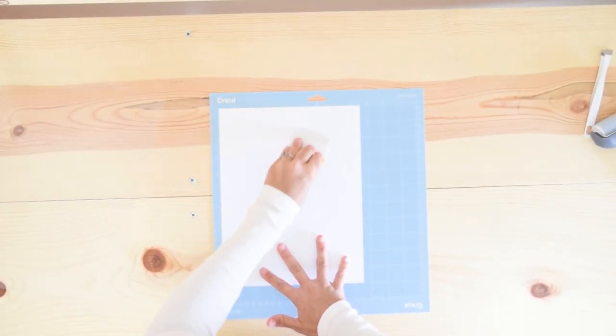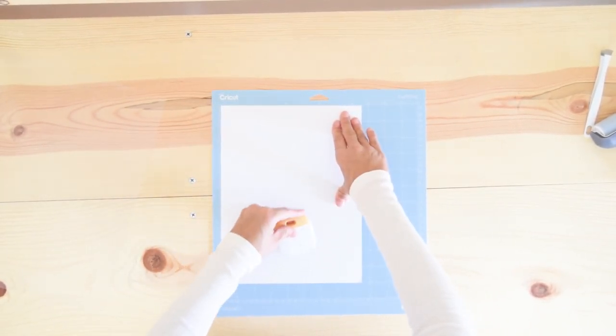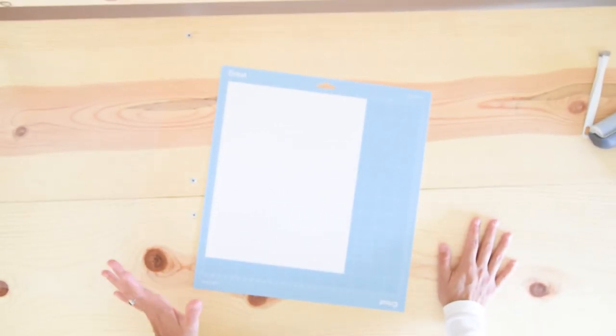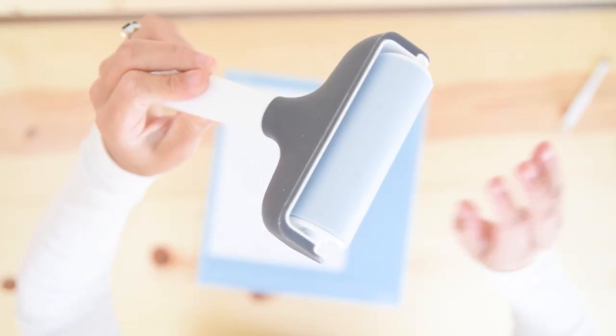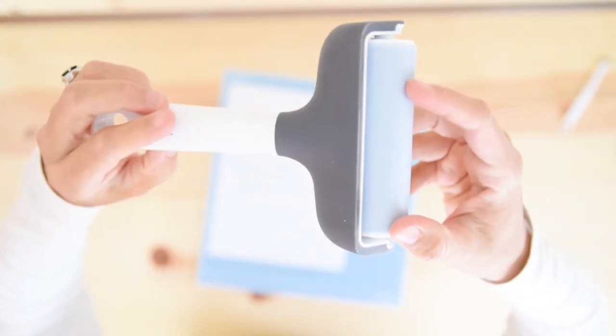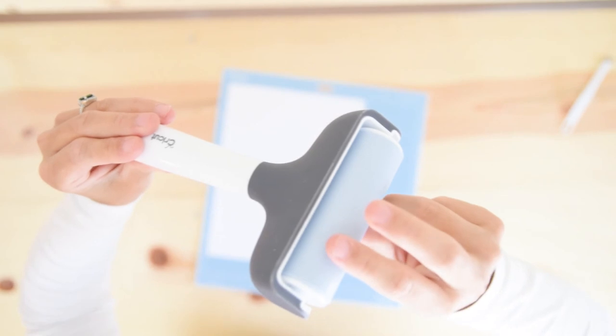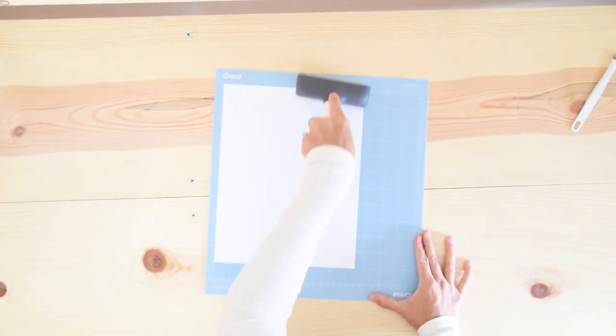It's very important for you to secure it and have it stick well to the mat. But my favorite way to secure a material to a Cricut mat is using the brayer. Let me show it to you. This little guy here is amazing. I love it so much. It just saves a lot of time, so you just stick it well to the mat and there you have it. Your material is right there.